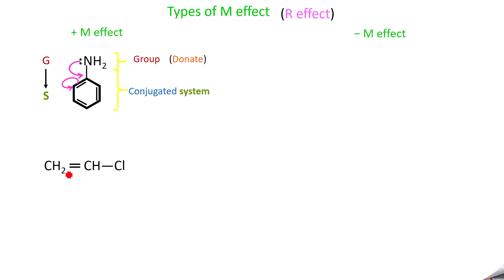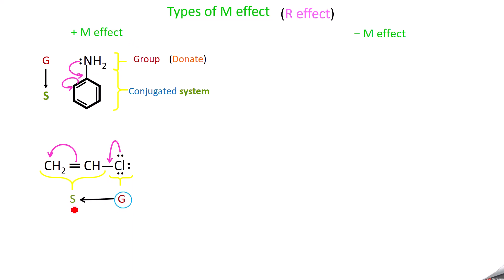Take one more example: vinyl chloride. The double bond is the system and the chlorine is the group. Chlorine has three lone pairs of electrons. Shifting one lone pair into the system gives more resonance structures. Again, the group donates electrons to the system, so this also comes under plus M effect — positive mesomeric effect or positive resonance effect, written as +M or +R effect.